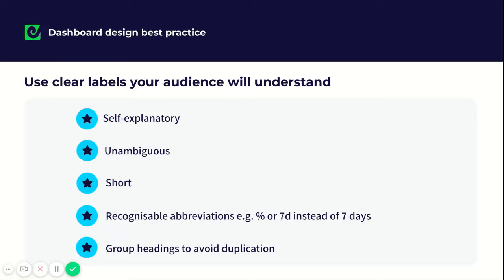Use clear labels that your audience will understand. Make sure that they're self-explanatory, unambiguous. Keep them short so they're concise and easy to read. Use recognizable abbreviations, for example, the percentage sign rather than writing percentage. And use group headings to avoid duplication so you're not repeating the same words over and over.